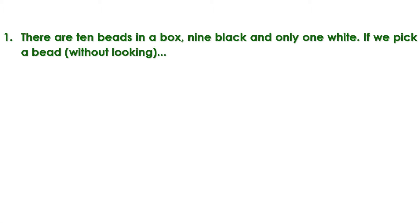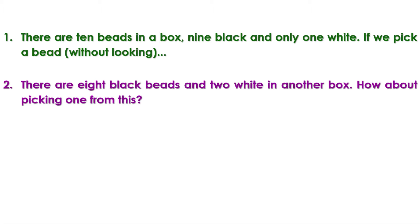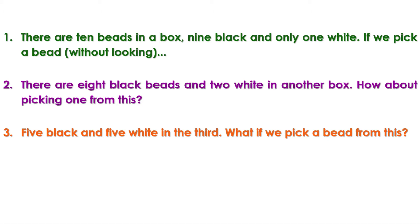Now let us take another situation. There are 8 black beads and 2 white beads in another box. Again, the number of black beads is more, so it is most likely to be black, but sometimes it can be white also. In a third box there are 5 black and 5 white beads. If we pick a bead from this, it could be black or white — we can't say anything more.